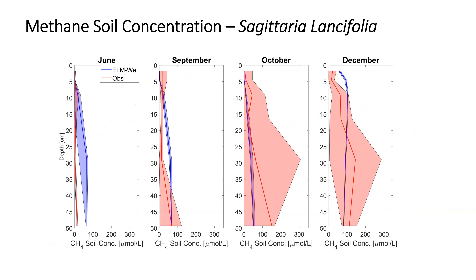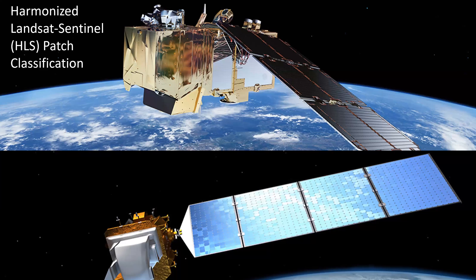We're showing for the dominant plant functional type the soil concentration profile observed versus modeled — for most of the measurement times, modeled values were within the range of observed. Lastly, I'd like to discuss the coupling we're working on: using HLS — Harmonized Landsat Sentinel-2 — data for classifying wetland vegetation, then using that yearly classification to inform ELM with the percentage of vegetation cover so we can analyze the resulting methane flux and see the effect of vegetation distribution on it.